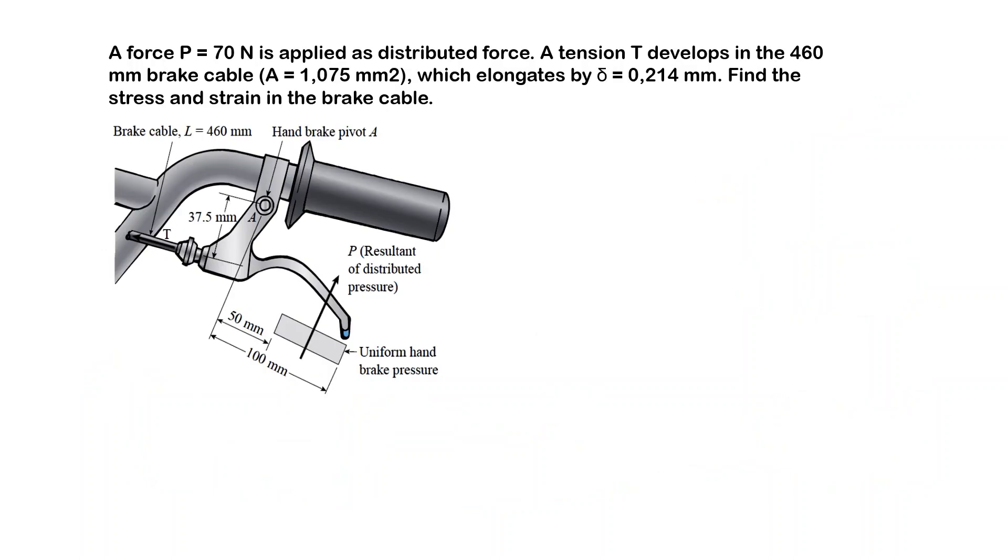Here we have a bicycle. We know that the bicycle is braked with the help of a cable. This is the tension force acting on the cable. Here we have the length of the cable. This force is applied with this handle. Here I apply a force P which is actually a distributed brake pressure, but instead I put a force P in the middle of this distributed force, and P is 70 newtons.